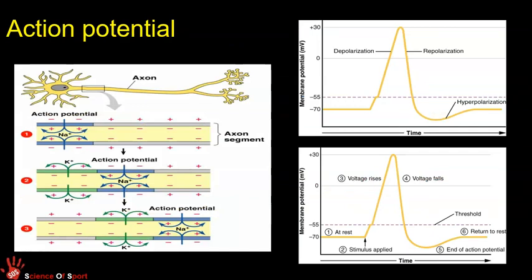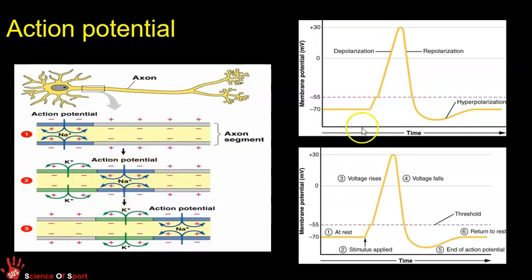The impulse travels along a neuron in a domino-like way: one section depolarizes, then the next, then the next, as a knock-on effect along the axon. The diagrams on the right show that this is electrochemical — chemicals move in and out of the membrane, changing the electrical charge. Inside the membrane is normally negative; when the impulse passes, it becomes positive, then returns to negative. The key takeaway is this domino effect of depolarization.